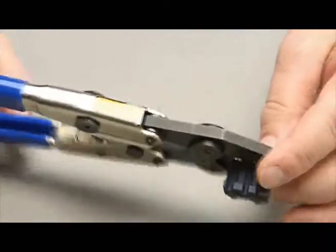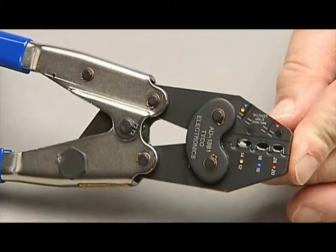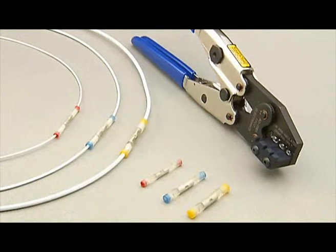The new tool also has a locator to align the crimp and a wire strip length to ensure proper insertion. Now for the actual installation, which should take about 3 to 5 minutes.